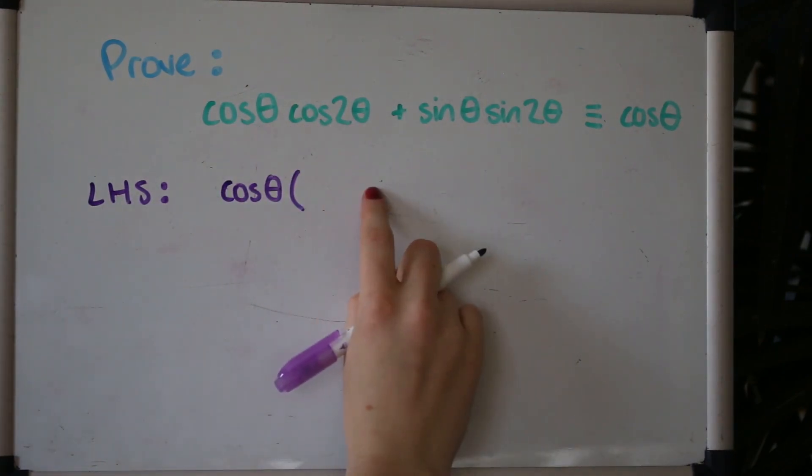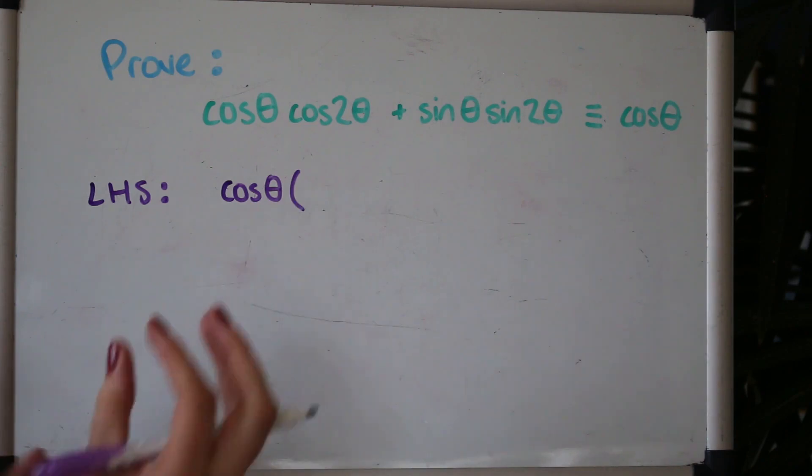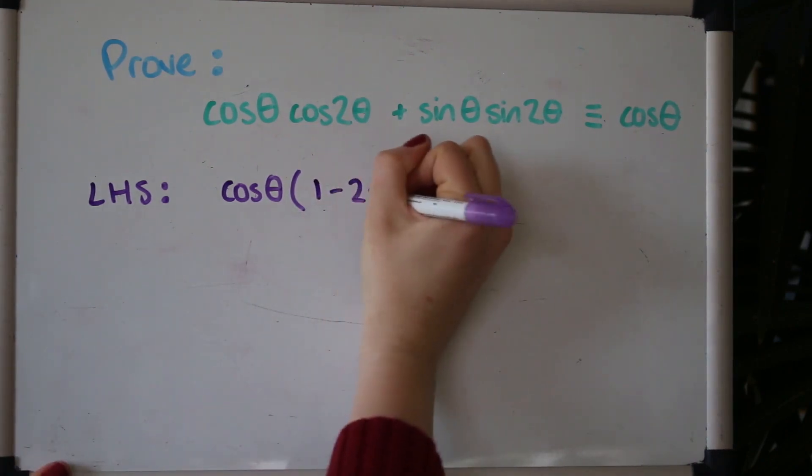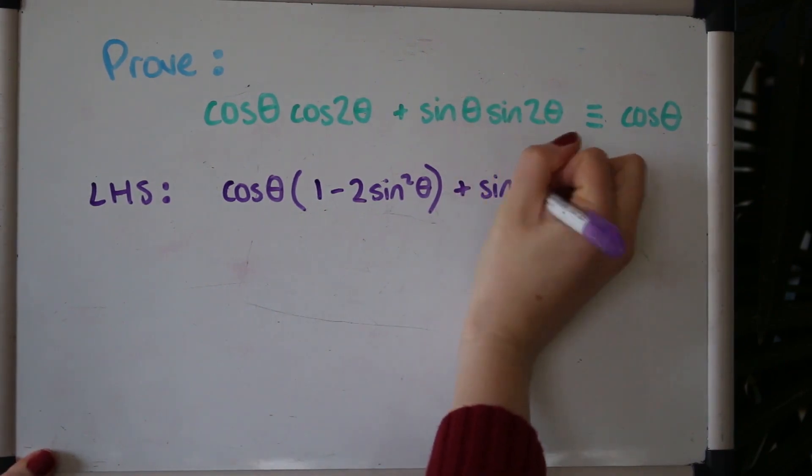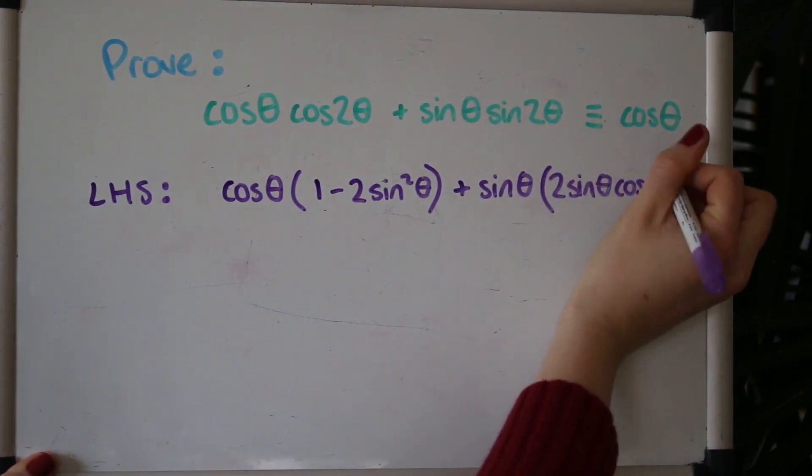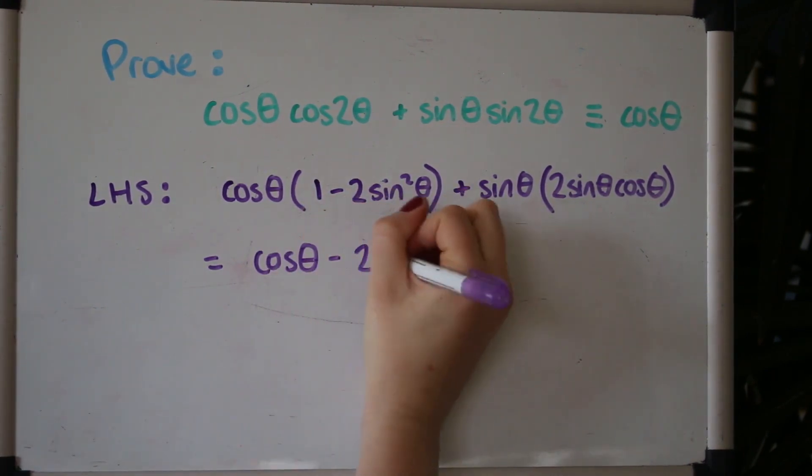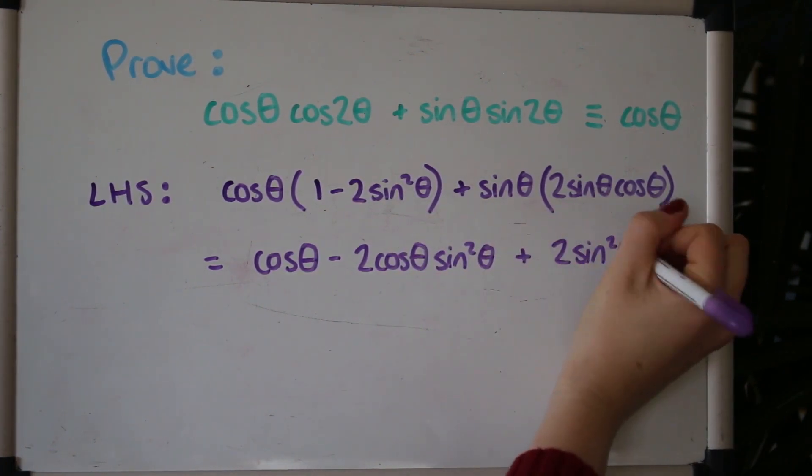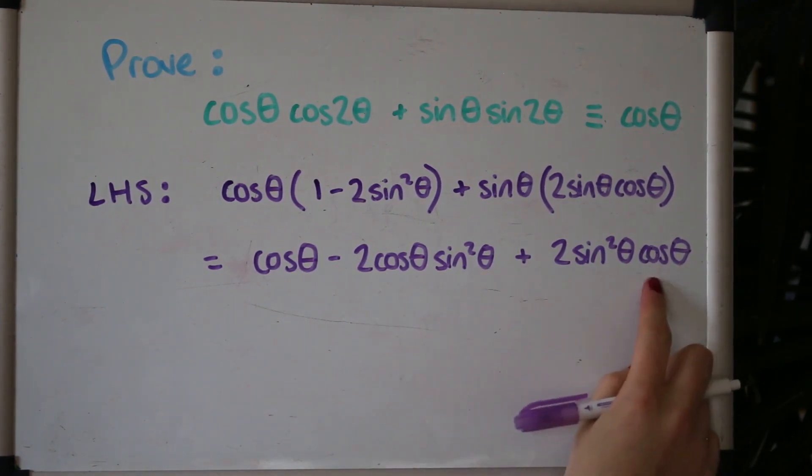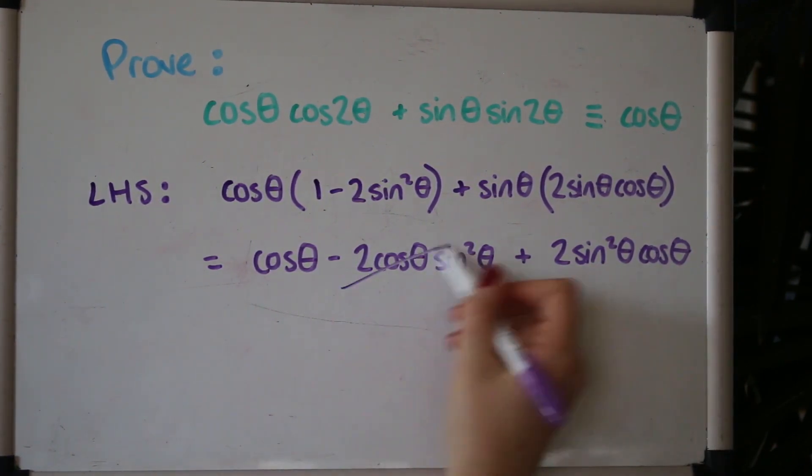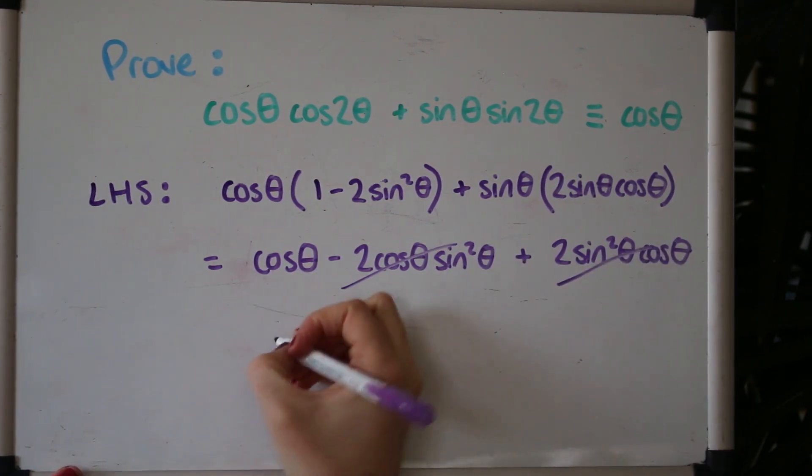We've obviously got a choice of three versions of the formula. Really you can just try any of them until something works and looks like it's going in the right direction. I'm going to use the one that's got a sinθ in it because I know that the next bit coming up has got a sine in it and I want to be able to combine things. So I'm going to try that one. Now I'm going to expand the brackets and collect terms. These terms are the same and that's 1 minus 1, so they cancel out leaving you with just cosθ which is the right hand side.